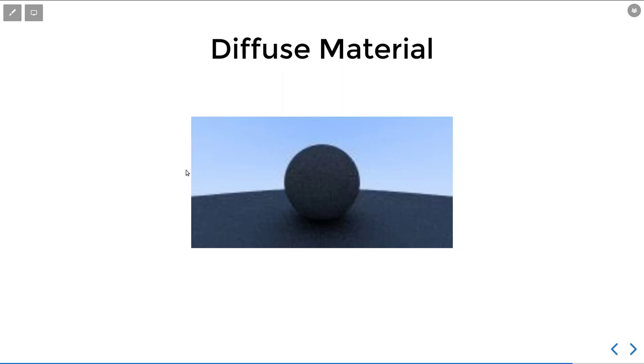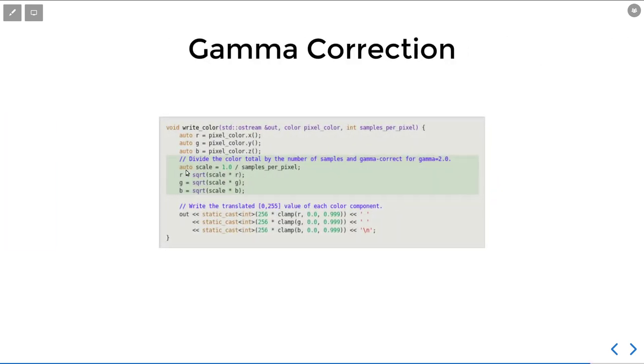As a result, we have this picture which doesn't look quite right because it is too dark. The reason is because we haven't done any gamma correction. So there are two kinds of color space we care about. The linear color space is where we should do all our lighting calculations in.